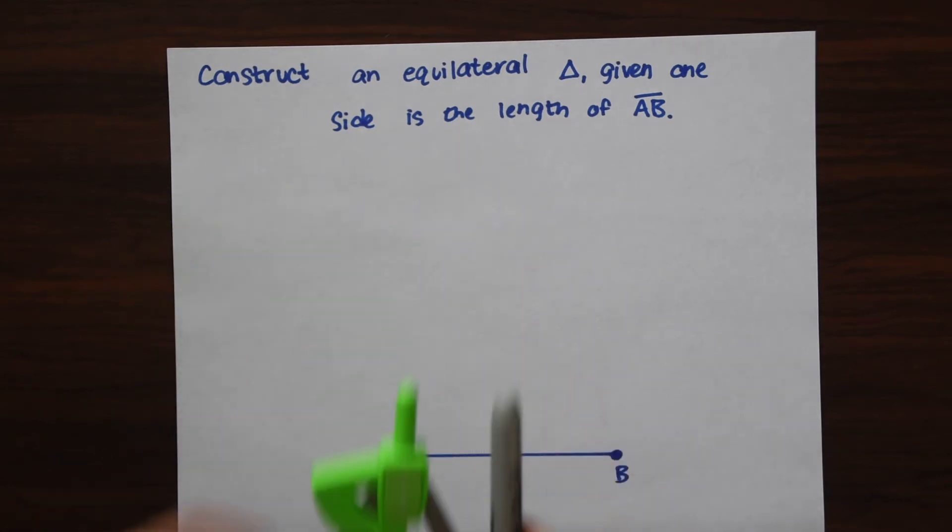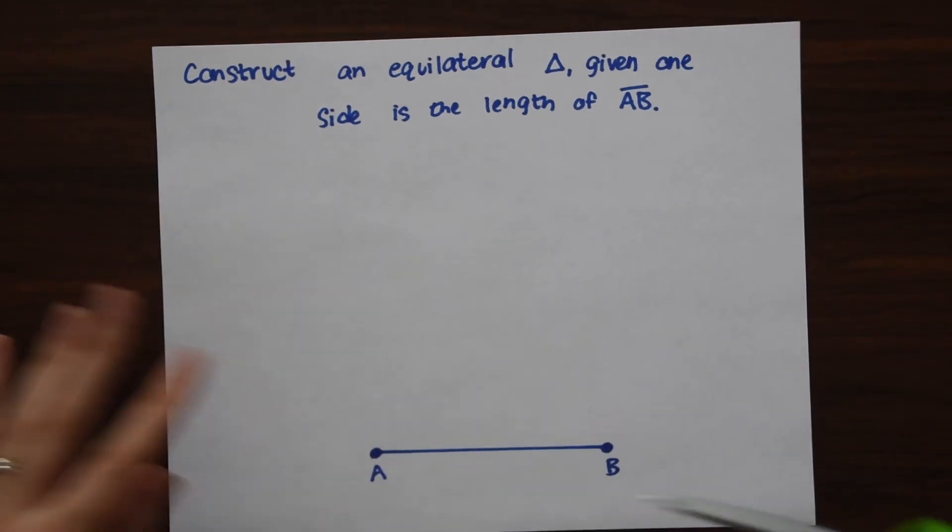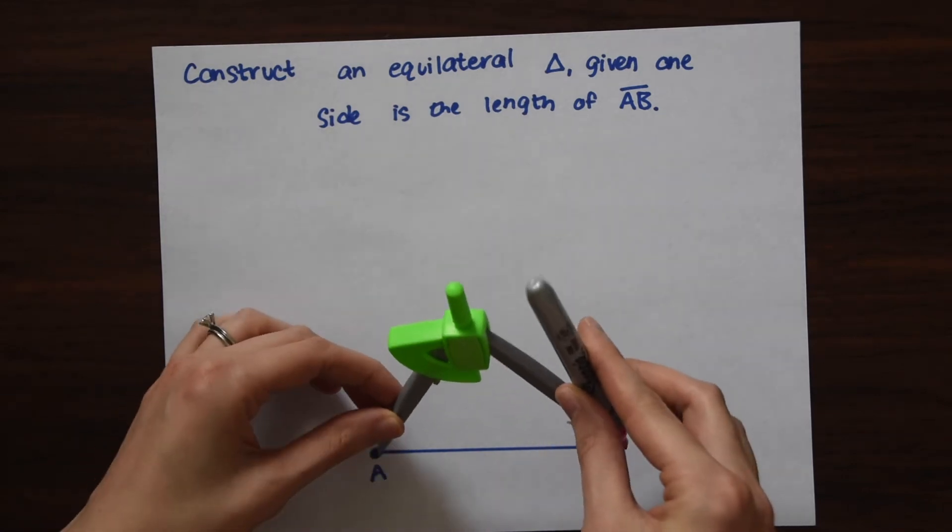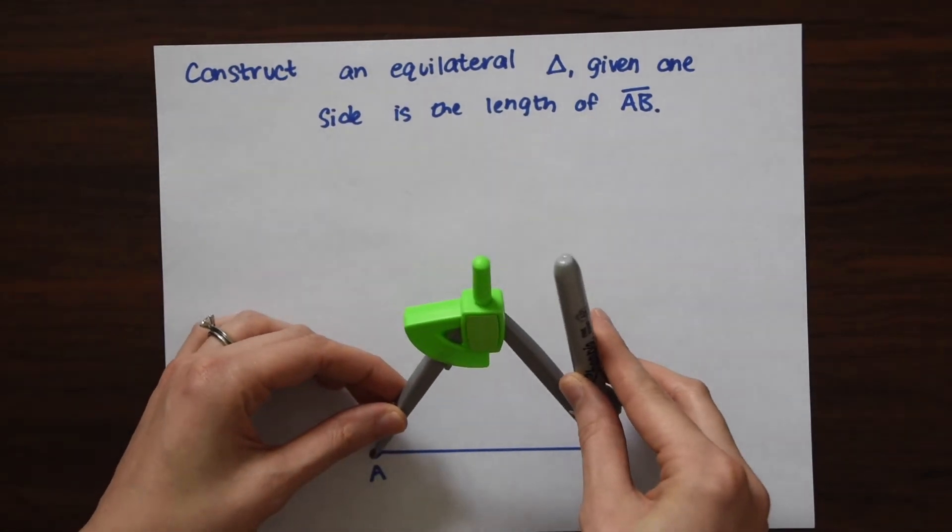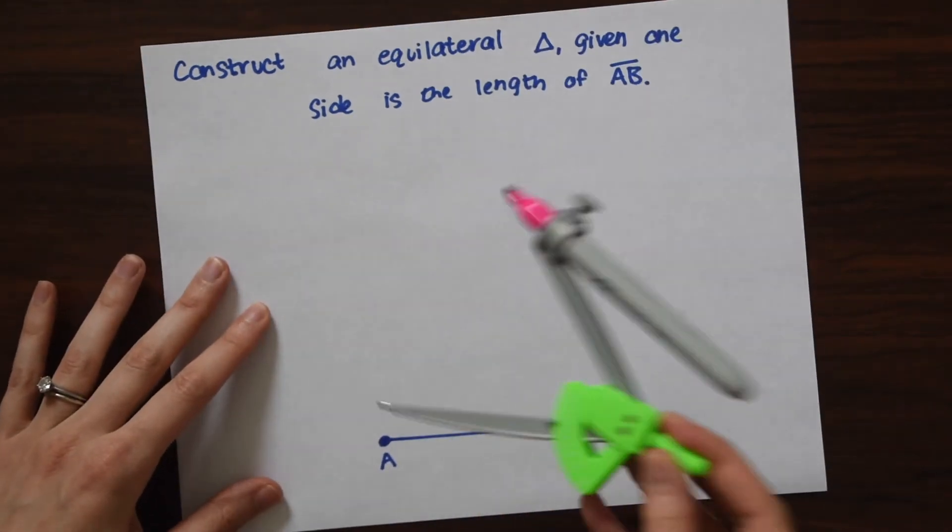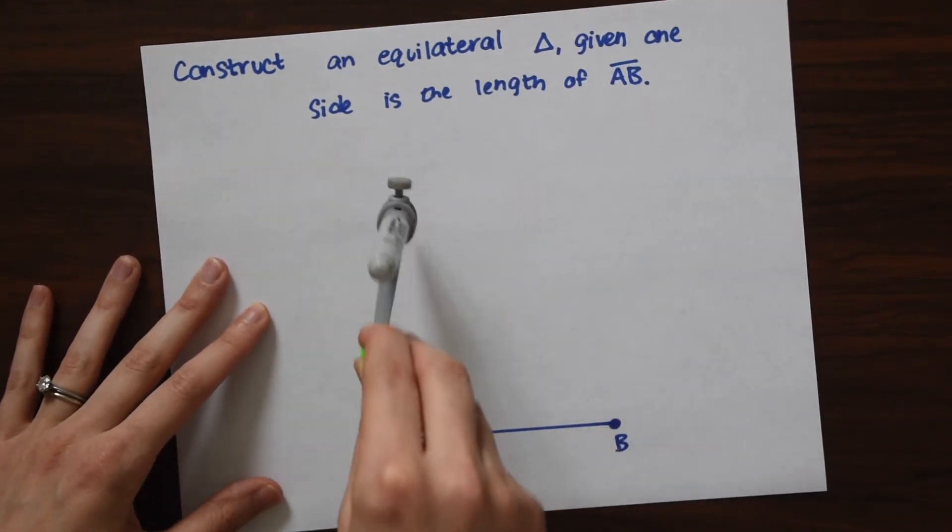So let's take out our compass. The first thing we're going to want to do is measure out the length of AB using the compass. So we're just going to get to the length of that.